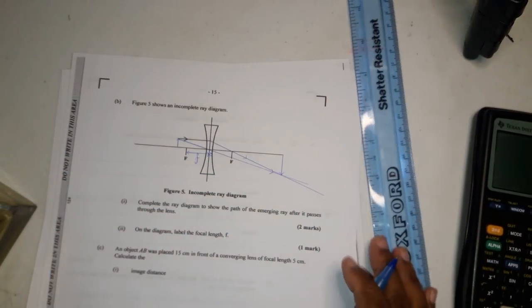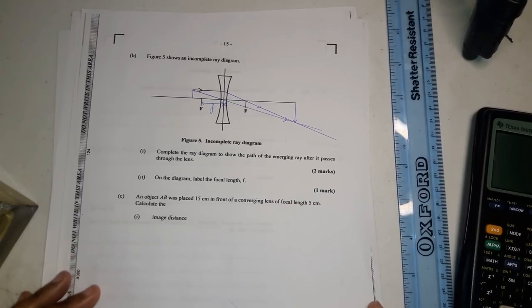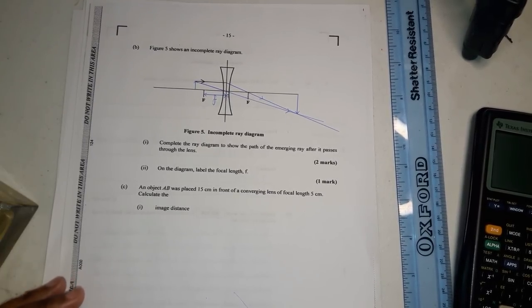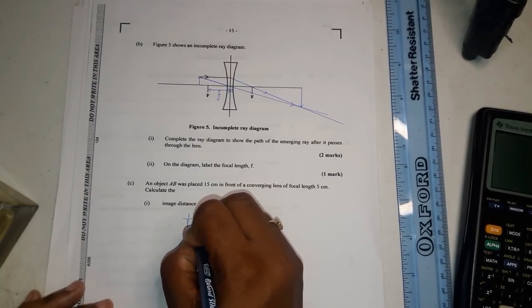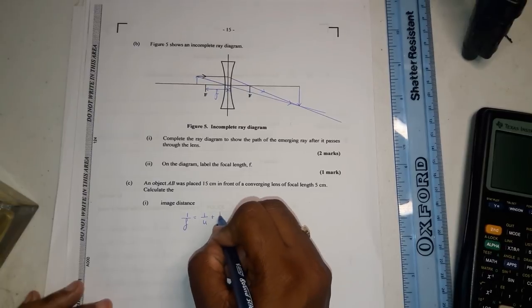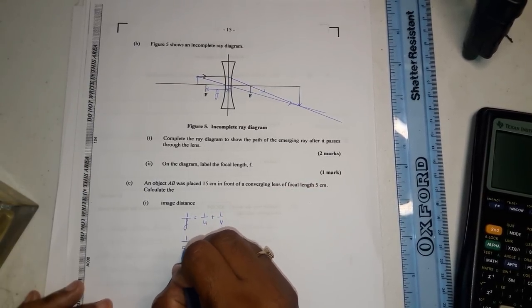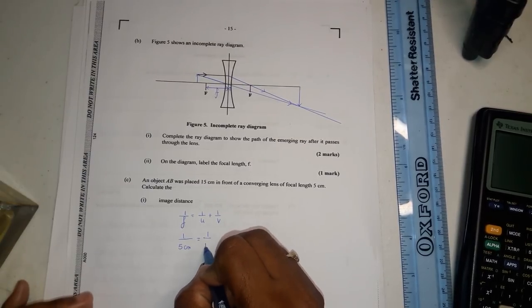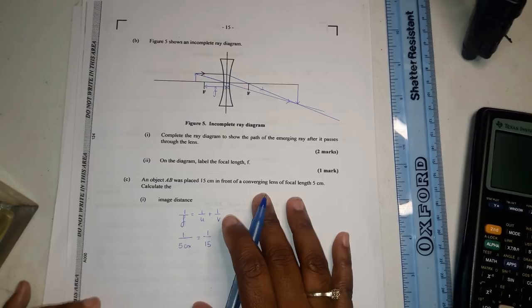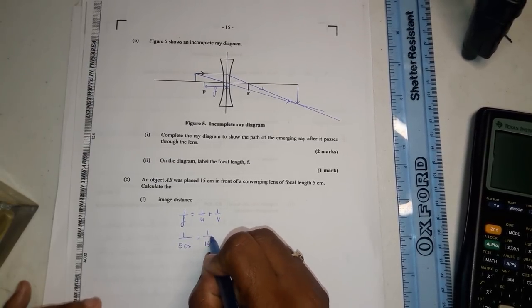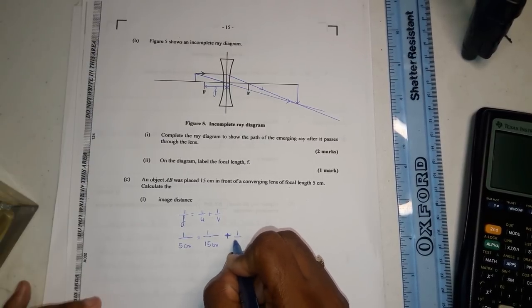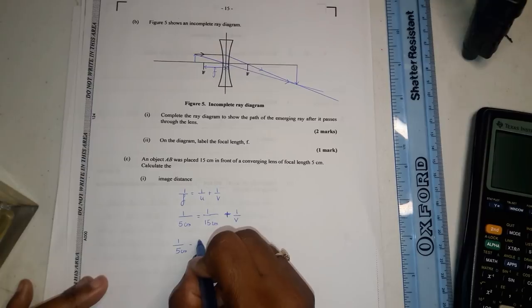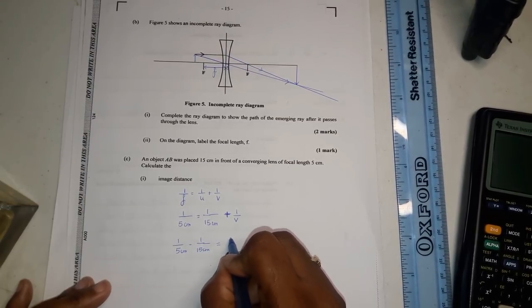An object AB was placed 15 centimeters in front of a converging lens of focal length five centimeters. Calculate the image distance. So we use lens equation one over F equal one over u plus one over v. And we know the focal length is five centimeters. So we can say one over 15 and we're looking for the image distance equal to one over v. So you're going to have one over five centimeters minus one over 15 centimeters equal to one over v.